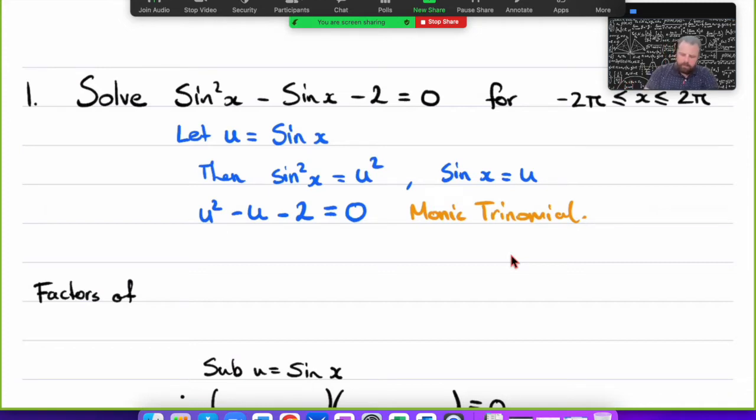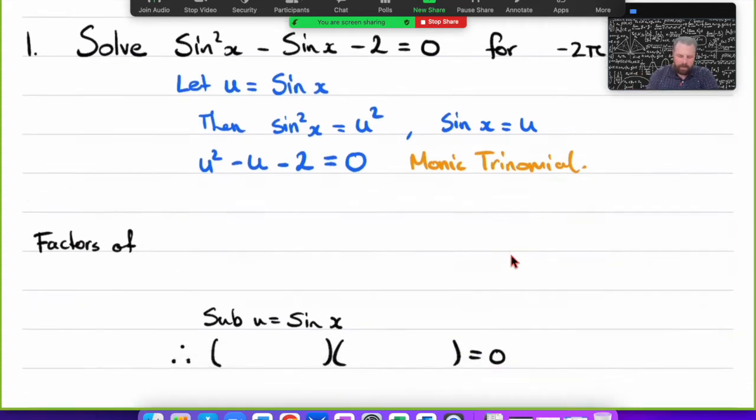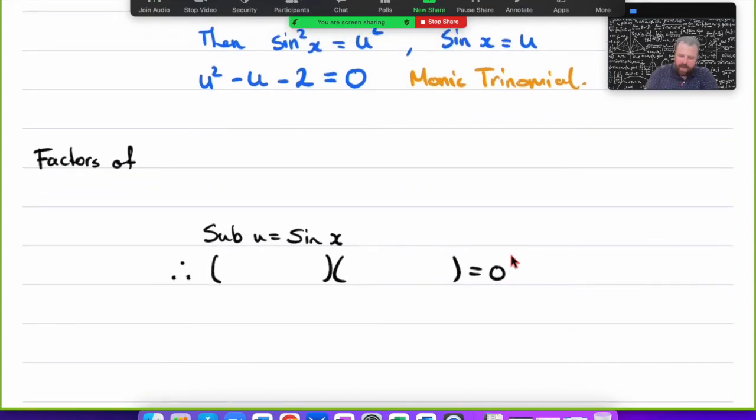So let's go through and solve. Factors of -2 are going to be 1 and 2, remembering one of them needs to be negative. Since this u is negative, I know my highest factor is going to be negative. 1 - 2 is -1, 1 × -2 is -2. So I know my factors are +1 and -2.